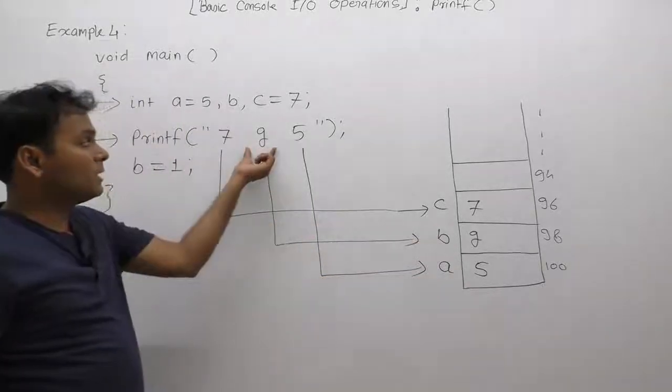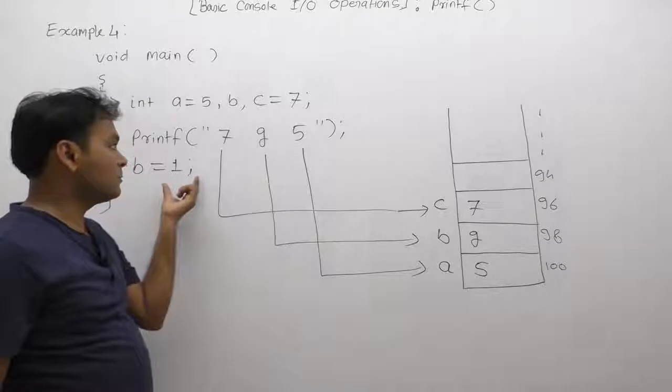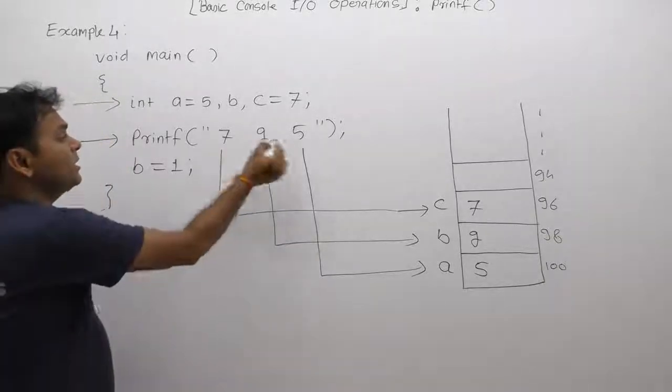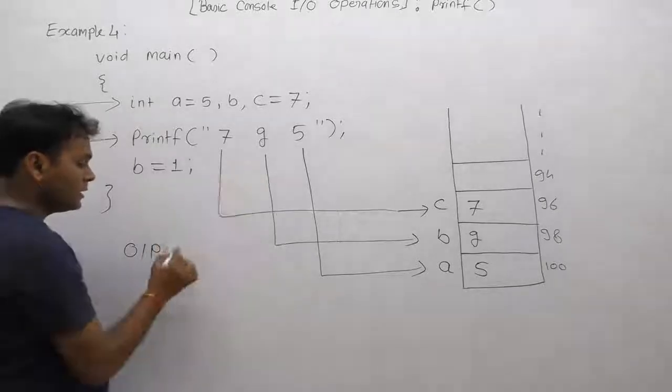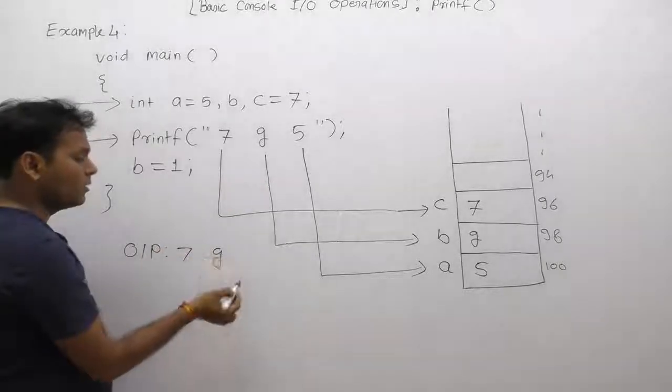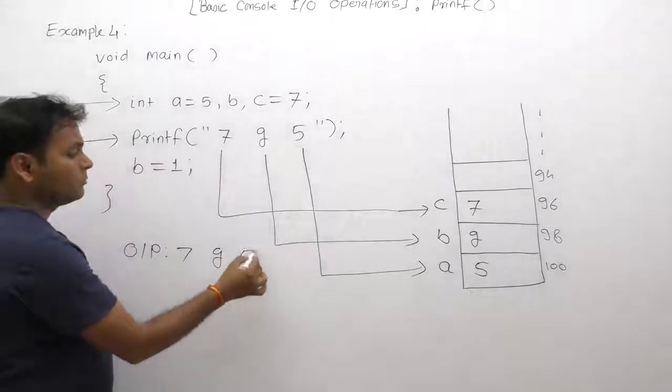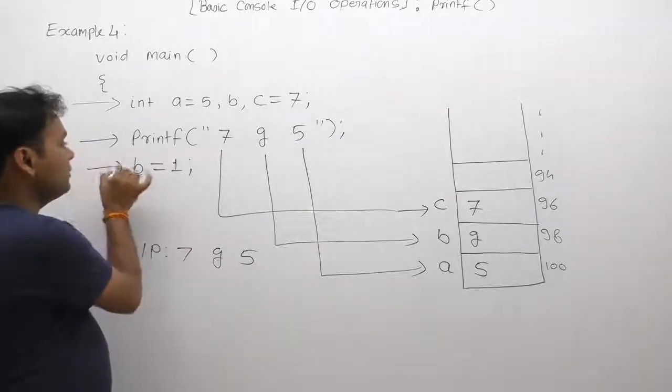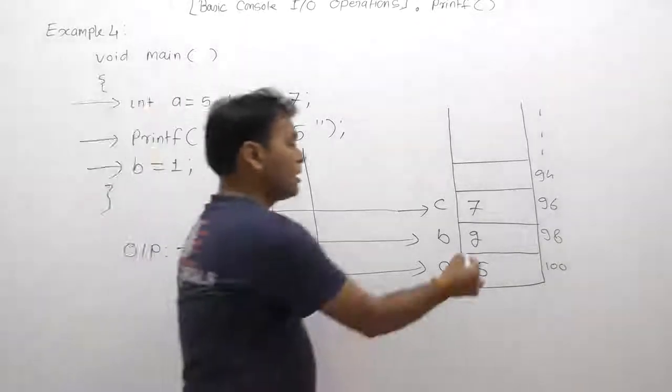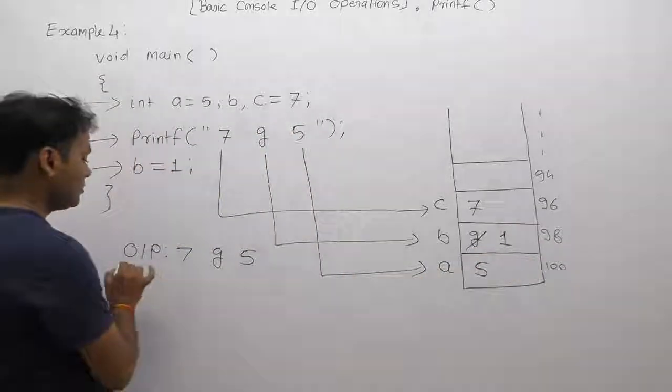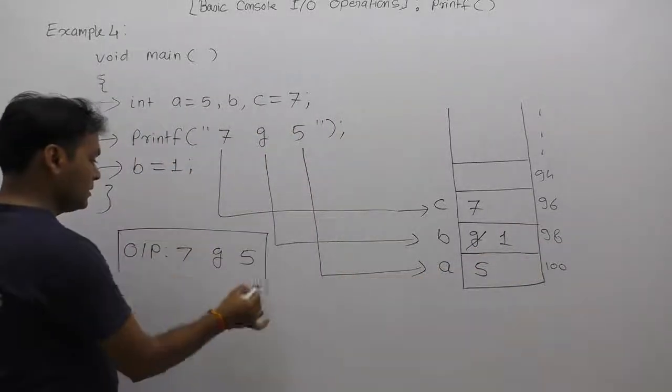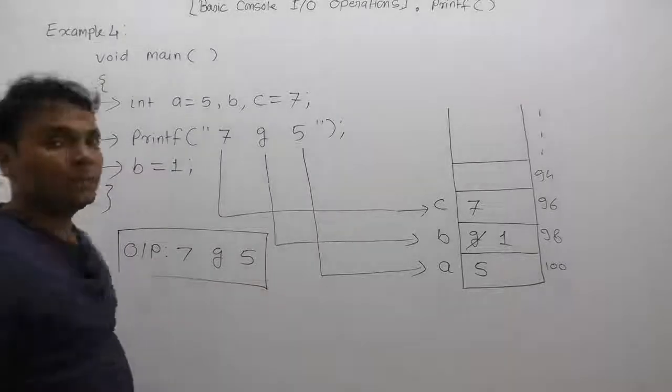Therefore here we are replacing garbage, not the initialized value one. Therefore the final output in that case, printf will display output message as c, space, some unknown number, then five. After that, finally b is assigned by one. Now the garbage value is replaced by one, but the final output of that example is c, garbage, and five.